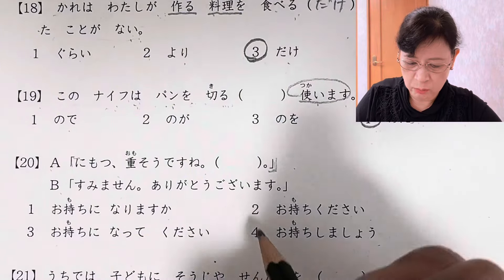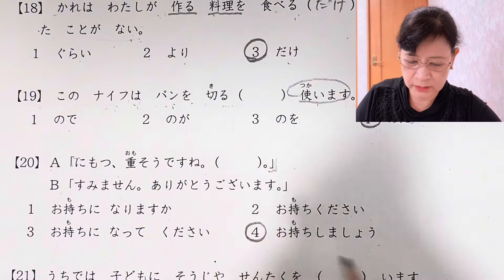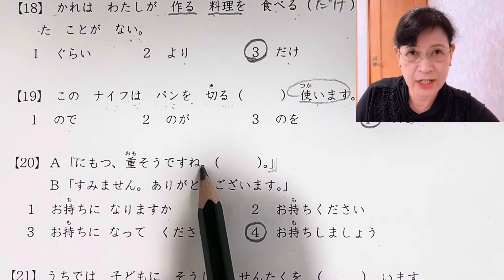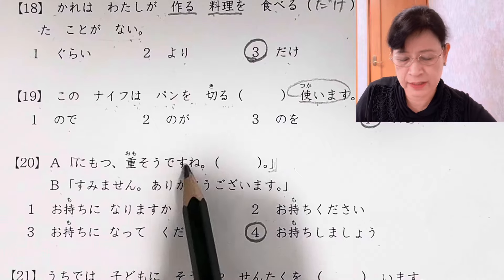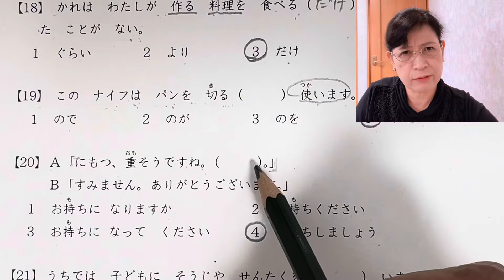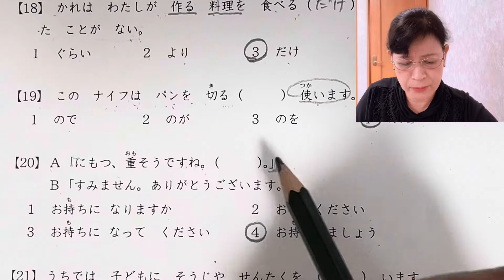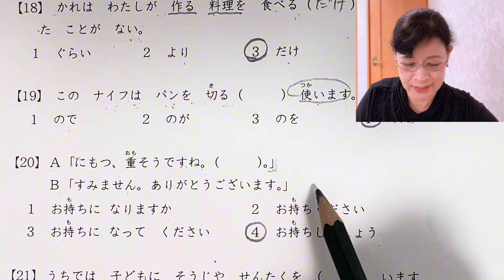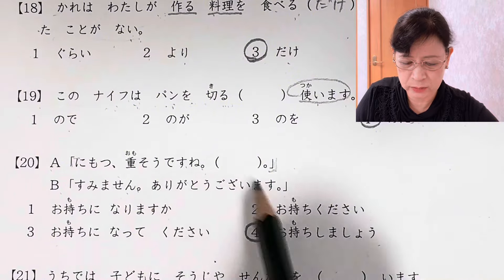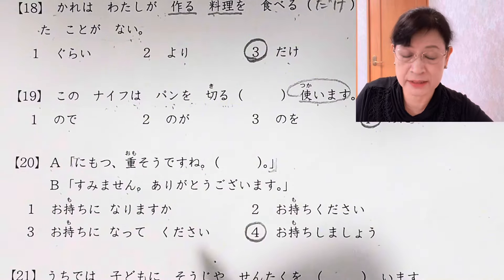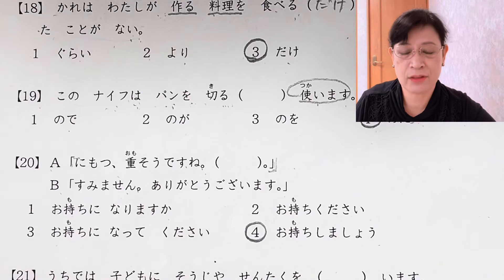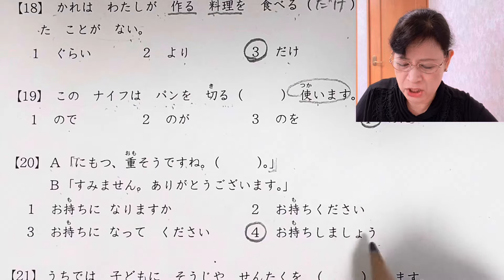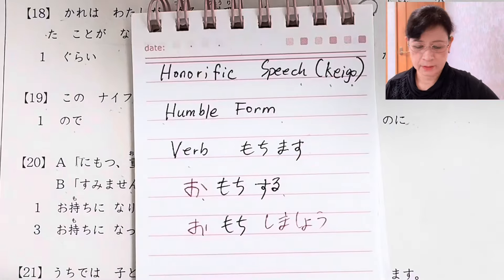The answer is お持ちしましょう. A says 荷物重そうですね - your luggage looks heavy. Can I carry it for you? Or shall I carry it for you? And B says すみません、ありがとうございます - oh, thank you. すみませんありがとうございます just means the same, it's gratitude, thanking somebody.